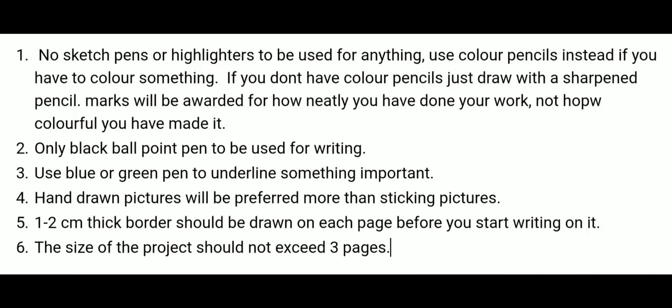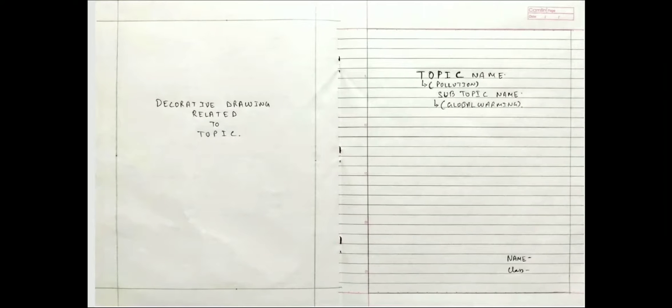Hand drawn pictures will be preferred more than sticking pictures. A one to two centimetre thick border should be drawn on each page before you start writing on it. The size of the project should not exceed three pages. When making the project, make sure you follow the following sequence. In the first page on the ruled side, the name of the topic and the subtopic should be neatly written. The name of the topic is pollution and the subtopic is global warming. In the bottom right corner of your page, your name and class should be mentioned.